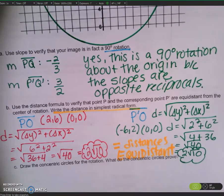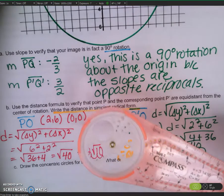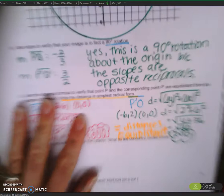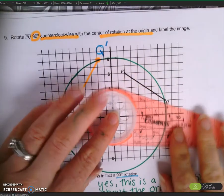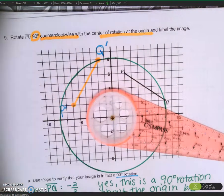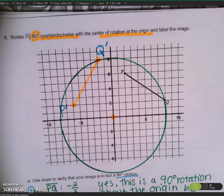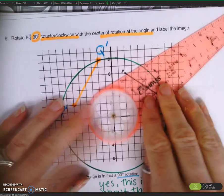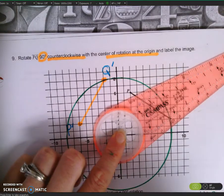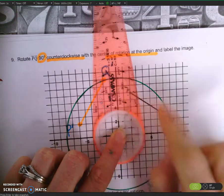Draw concentric circles for the rotation. What do the concentric circles prove? When we're drawing our circles, we want to use the metal point in our center, and line up one of the open circles on the vertices we want to draw. I already did Q, and Q and Q-prime ended up on the same circle. Be careful — you may need to take your paper out of your binder to draw your concentric circles. Now I'm going to see if P and P-prime can land on the same circle using the same center of rotation at the origin.